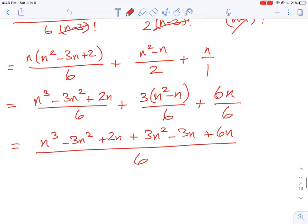And then when you have an expression like this, you want to check to see if some things can cancel. So we have a negative 3n squared and a 3n squared will cancel, and then this will be left with here, n cubed. 2 minus 3 is negative 1 plus 6 is going to be plus 5n all over 6.